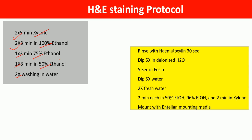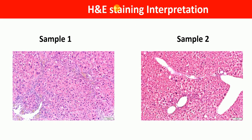After this process, the tissue sections are put in hematoxylin for 30 seconds, then dipped five times in deionized water, followed by five seconds in eosin, five times dipping in water, two times in fresh water, then two minutes each in 50% ethanol, 96% ethanol, and two minutes in xylene. Finally, the slides are mounted with Entellan mounting media.